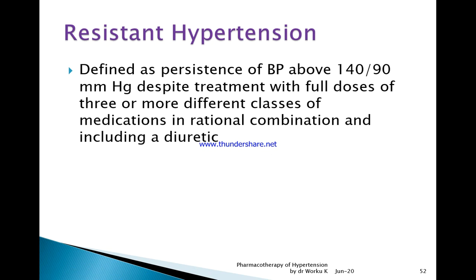Resistant hypertension is defined as persistent blood pressure above 140 by 90 mmHg despite treatment with full doses of three or more different classes of anti-hypertensives in rational combination, with at least one being a diuretic. If there is no response, it is called resistant hypertension, and one must look for causes such as secondary hypertension, true resistance, dosing issues, or other underlying problems.